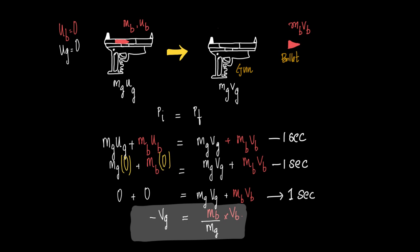Mathematically, the initial momentum has two components: one from the gun and one from the bullet. Initial momentum equals mass of gun times initial velocity of gun plus mass of bullet times initial velocity of bullet. Since both the gun and bullet are initially at rest, both terms become zero, so initial momentum equals zero.